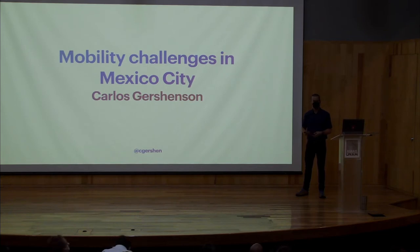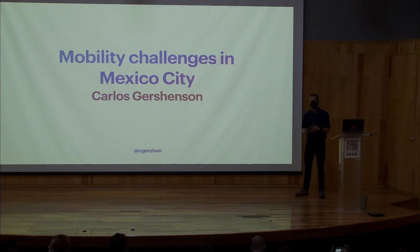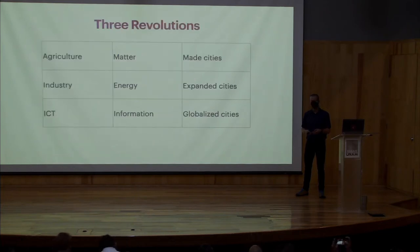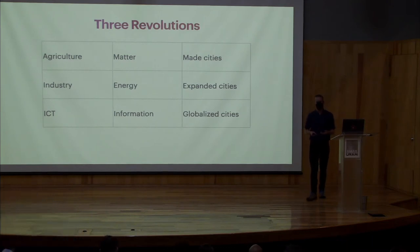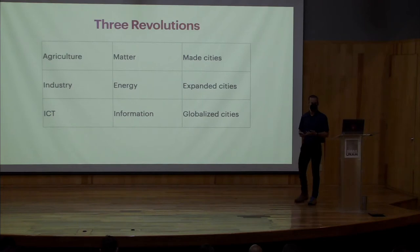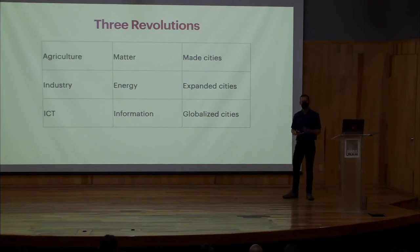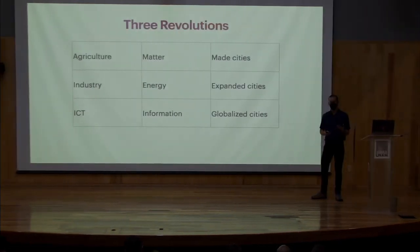Thanks for being here. I want to give a brief introduction to the problems we face in Mexico City, and then zoom in on mobility problems. Throughout our history, we can identify three main revolutions: the agricultural revolution, the industrial revolution, and the information revolution that we are living. The first dealt with the control of matter, the second with the control of energy, and the third with the control of information. Each has developed technologies and knowledge that transformed the way we live in different settlements.